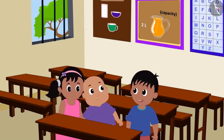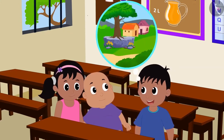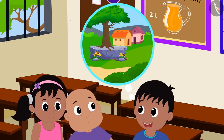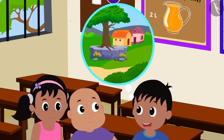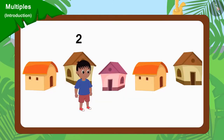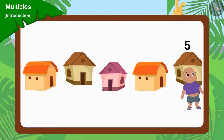Raju told Pinky and Bablu a plan. He said that they would not go to the same house but go to different houses. There are a total of 21 houses in the village. Raju will go to every second house, Pinky will go to every third house, and Bablu will go to every fifth house.